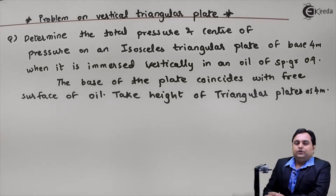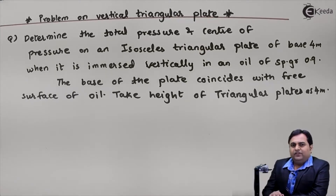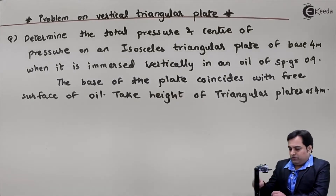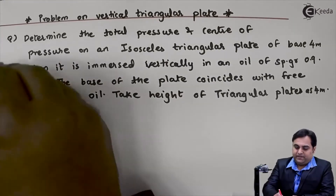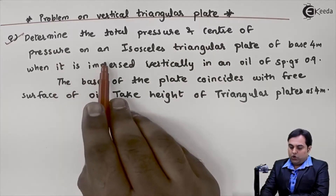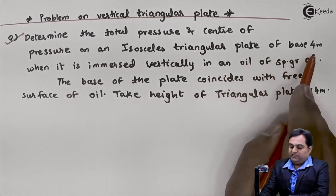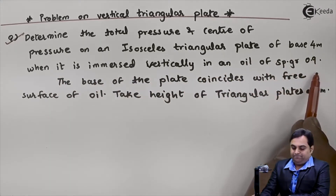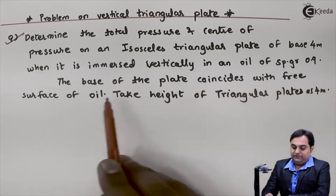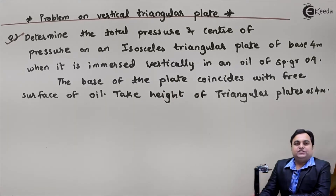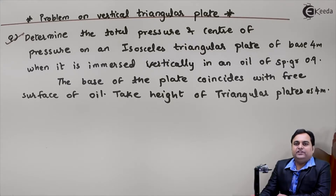Hello friends, in this video we will see a problem in which there is a vertical triangular plate immersed in oil. The question asks us to determine the total pressure and center of pressure on an isosceles triangular plate. I will write the given data first.